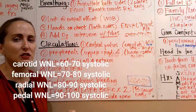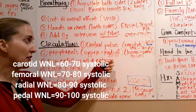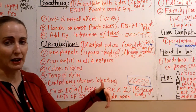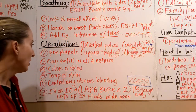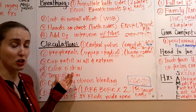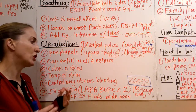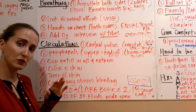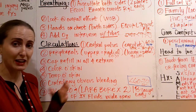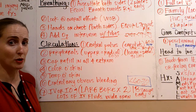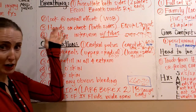To have a good strong carotid pulse, their systolic has to be at least 60–70. A strong femoral means systolic at least 70–80. A strong radial means at least 80–90. A strong pedal means at least 90–100. Check cap refill in all four extremities, and check the color, overall color, and temperature of their skin. Control any obvious bleeding — don't get distracted by weird crazy injuries. Delegate bleeding control and have someone else control it while you continue your trauma assessment.